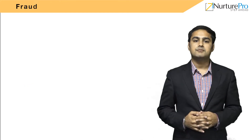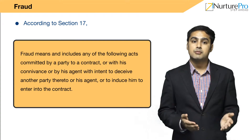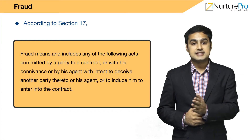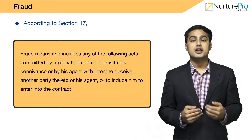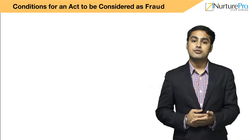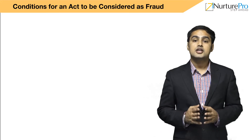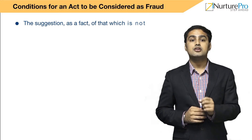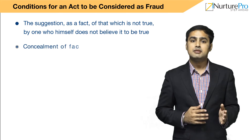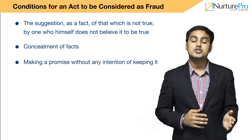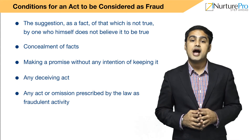According to Section 17, fraud means and includes any of the following acts committed by a party to a contract, or with his connivance, or by his agent, with the intent to deceive another party or to induce him to enter into a contract. Acts regarded as fraud include: a suggestion of a fact which is not true by one who does not believe it to be true; concealment of facts; making a promise without any intention of keeping it; any deceiving act; or any act or omission prescribed by law as a fraudulent activity.